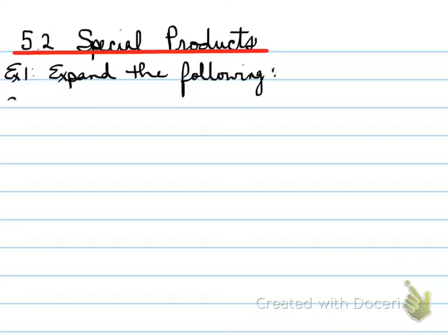Okay, 5.2, special products. We're going to look at special products now because later on we're going to have to do this backwards. So in 5.2 we're expanding special products. You're asked to expand the following and you're given a couple of examples here.